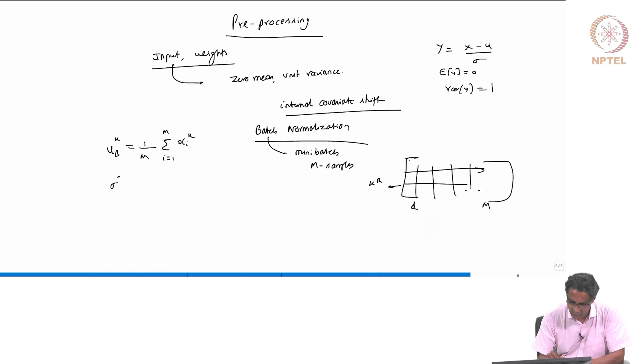And the variance will be sigma square b k, this is the kth entry will be 1 by m summation, now x_ik minus mu_b_k, which is of course a constant, does not depend on i, mu_b_k, i equal to 1 to m and square.